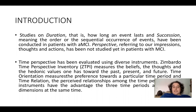Studies on duration — that is, how long an event lasts — and succession, meaning the sequential occurrence of events, have been conducted in patients with aMCI. Time perspective, referring to our impressions, thoughts, and actions, has not been studied yet in patients with MCI. Time perspective has been evaluated using diverse instruments: the Zimbardo Time Perspective Inventory measures beliefs, thoughts, and hedonic values towards the past; time orientation measures preference towards a particular time period; and time relations measures the perceived relationships among time periods.